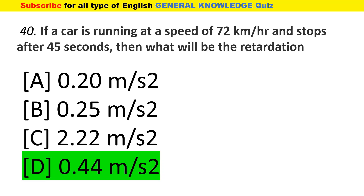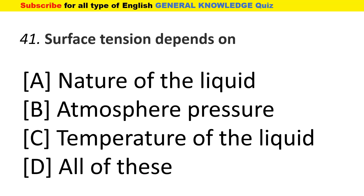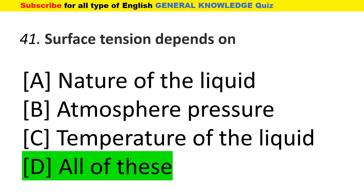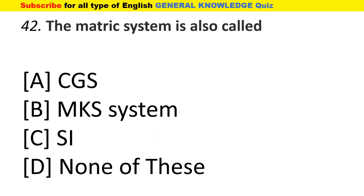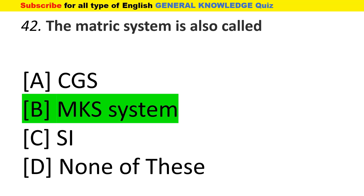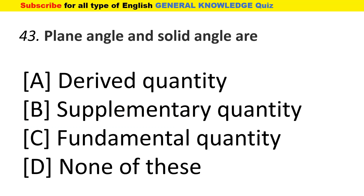Surface tension depends on all of these factors. The metric system is also called the MKS system. Plane angle and solid angle are supplementary quantities.